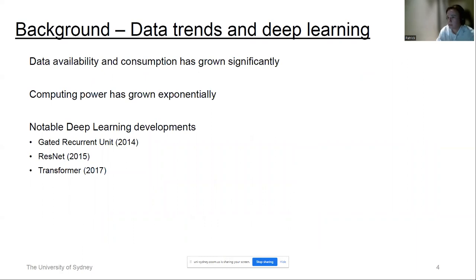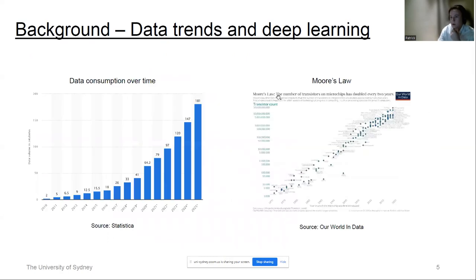Talking about data trends and deep learning, two points are quite notable: data availability and consumption has grown significantly, along with computing power over the past years. Some notable achievements in neural networks include the gated recurrent unit introduced in 2014, the residual network ResNet introduced in 2015, and the concept of self-attention or the transformer model introduced in 2017. Visualisations from Statistica and Our World in Data show historical data consumption growth and forecasts, as well as a log-linear chart reflecting Moore's Law — computing power doubling every two years, exponential in nature.